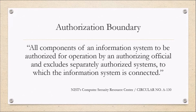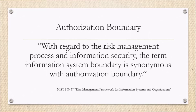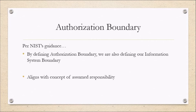The definition states: all components of an information system to be authorized for operation by an authorizing official, and excludes separately authorized systems to which the information system is connected. Continuing, from NIST Special Publication 837, with regard to the risk management process and information security, the term information system boundary is synonymous with authorization boundary. So by defining an authorization boundary, we're also defining our information system boundary, which allows us to more accurately present that ATO package to the authorizing official.